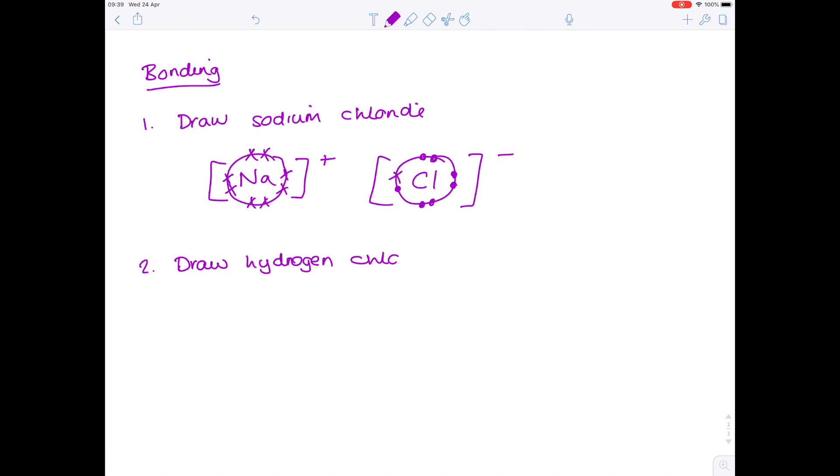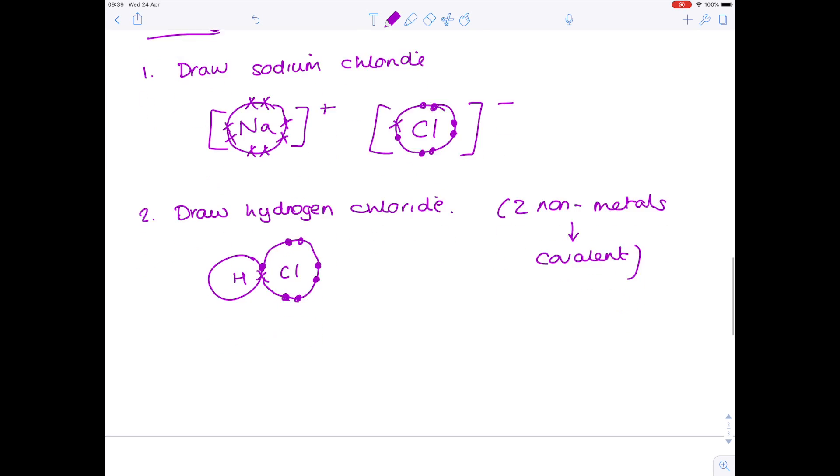This time we're being asked to draw hydrogen chloride. Notice that you have two non-metals here, which is why you're going to use a covalent bonding diagram. Hydrogen has one electron in its outer shell. Chlorine has seven. Here's your final answer.